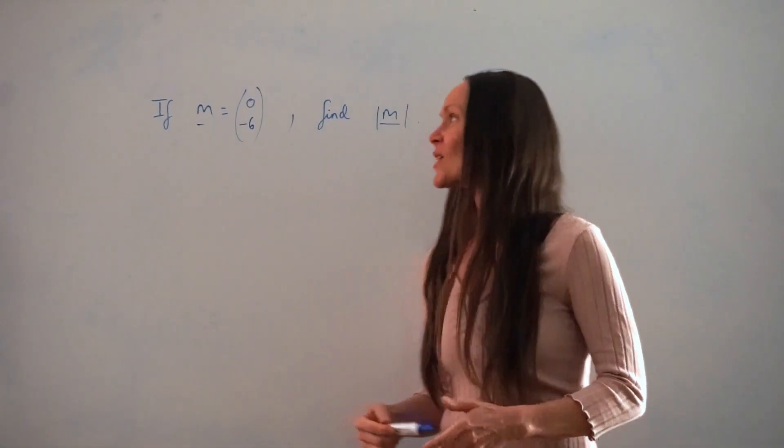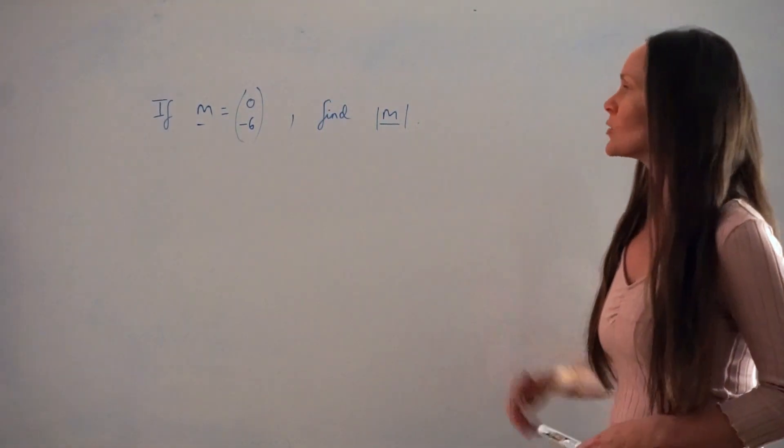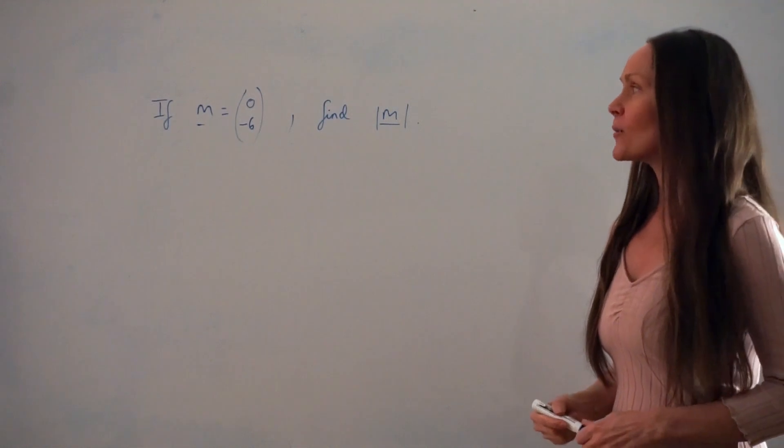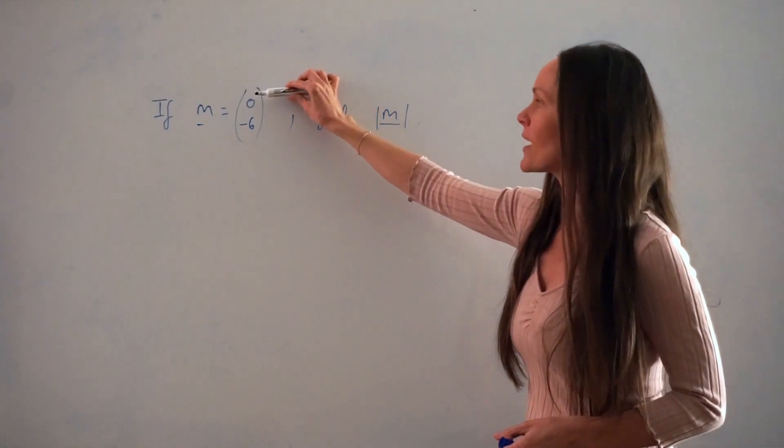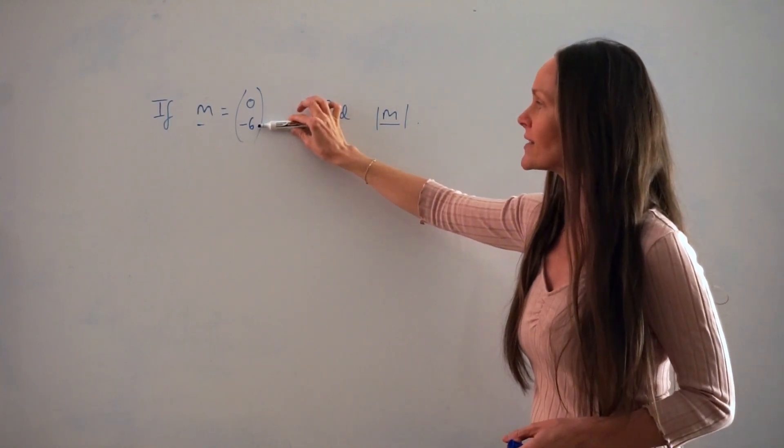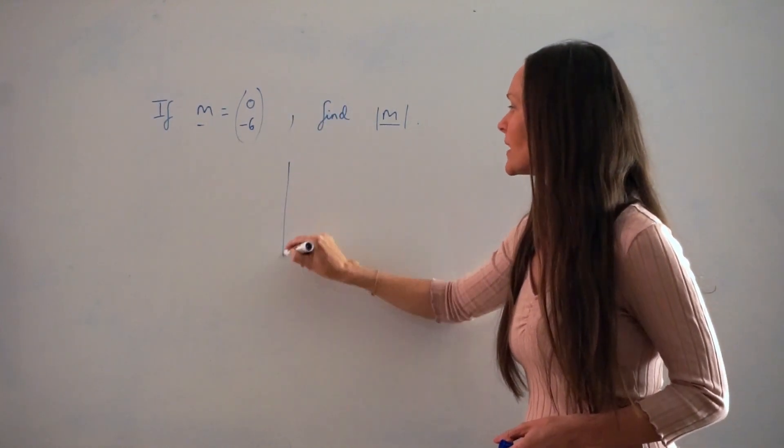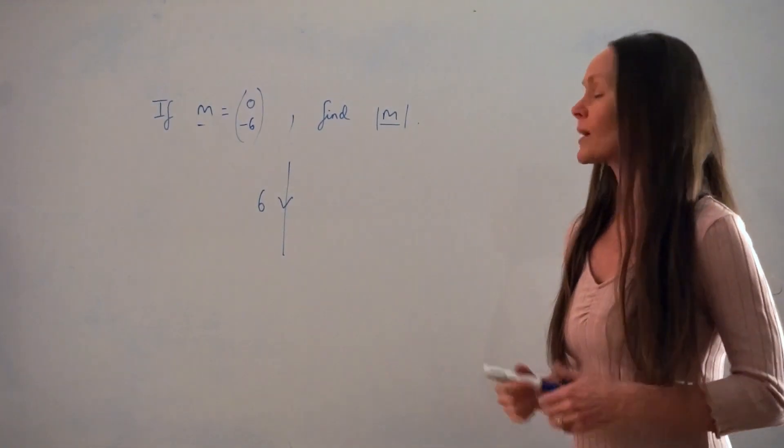So in this example, it says if n is equal to 0 minus 6, find the modulus of vector n. So again, if I just do a quick sketch, this time we can see that the vector is not moving left or right, it's just moving 6 units down. So it's just a vertical line with the arrow going that way, that is the vector we're trying to work out the modulus of.